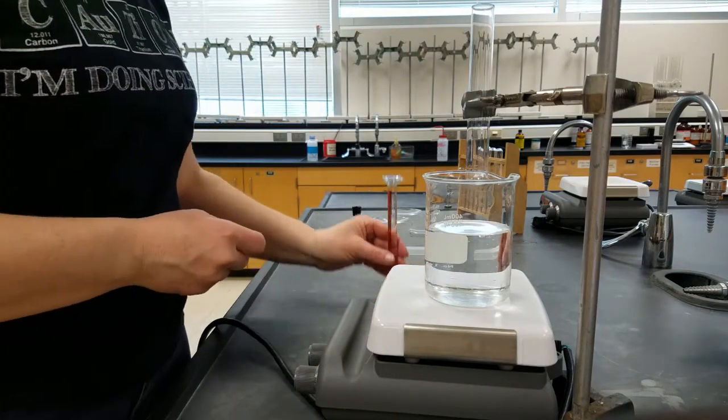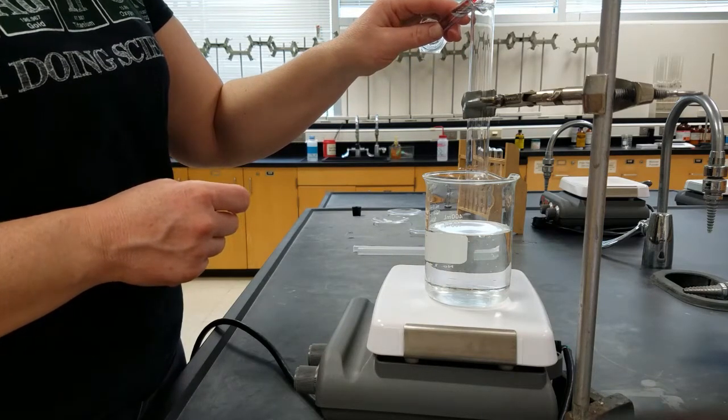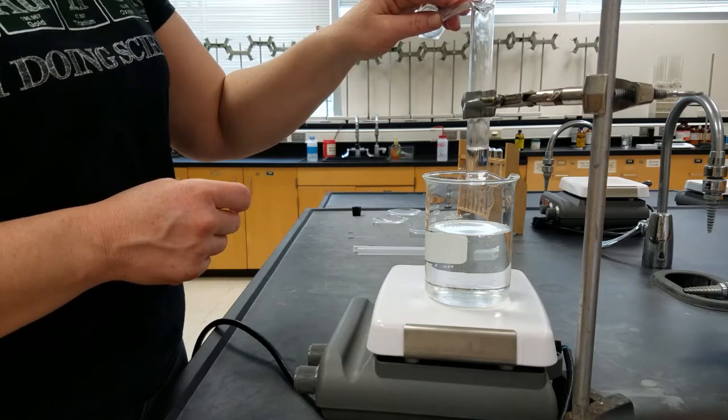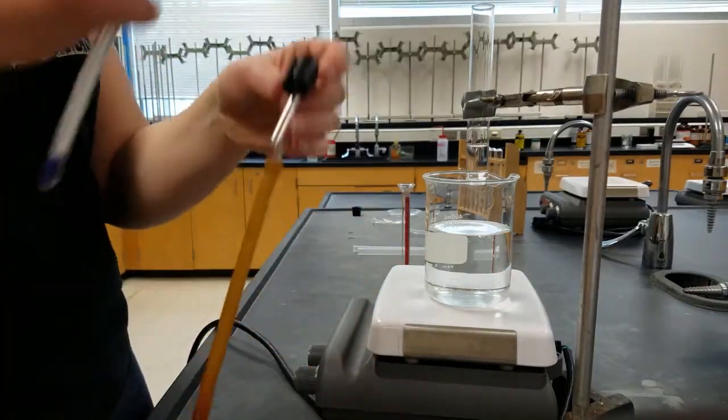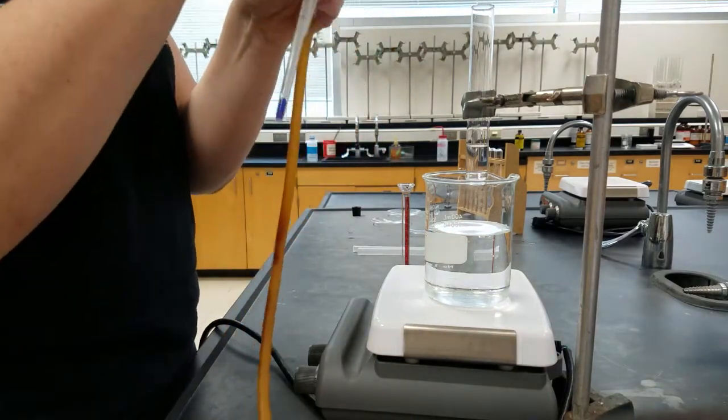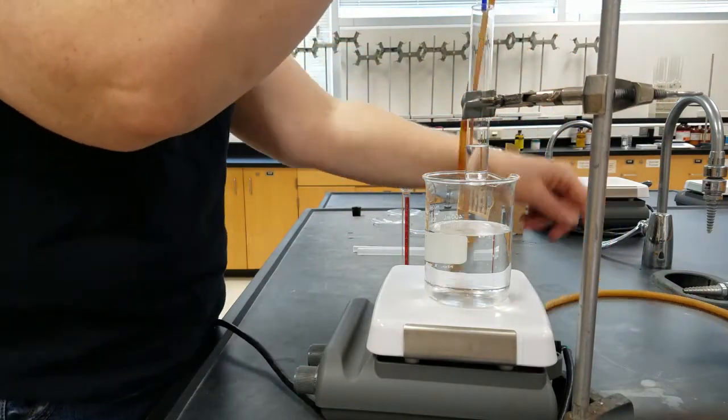We're going to add about half of our unknown liquid into the test tube. And then we're going to assemble our apparatus. So we've got our thermometer and a rubber hose to keep the vapors away from us.